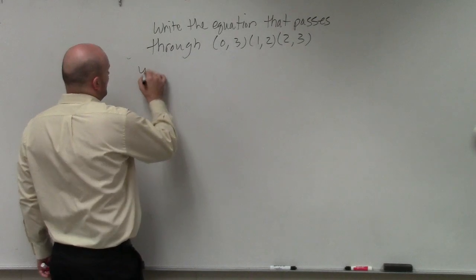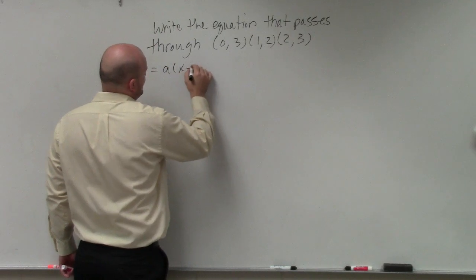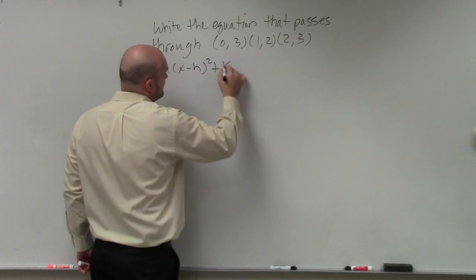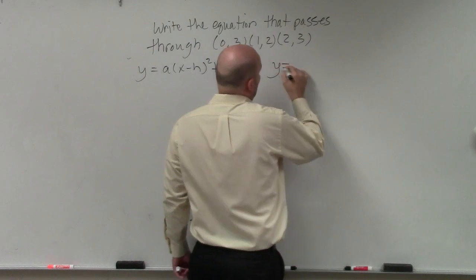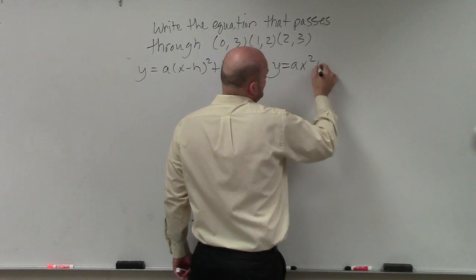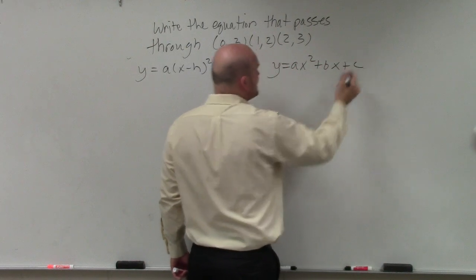Again, as we talked about, we have y equals a times x minus h squared plus k vertex form. y equals a times x squared plus bx plus c standard form.